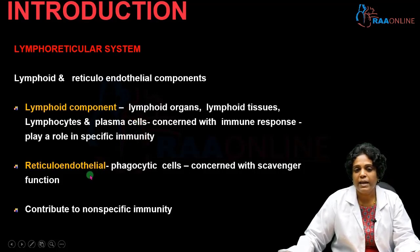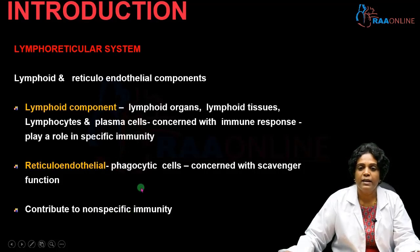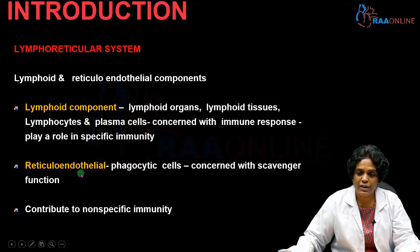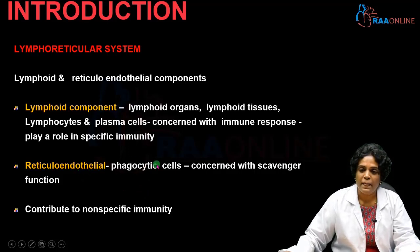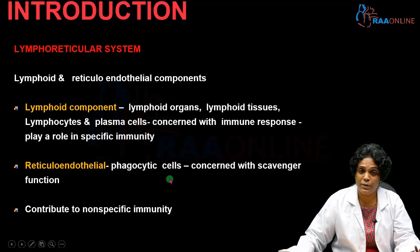Next is the reticuloendothelial component. It contributes to non-specific immunity. The main cells under this reticuloendothelial component are the phagocytic cells, and they are concerned with the scavenger function.